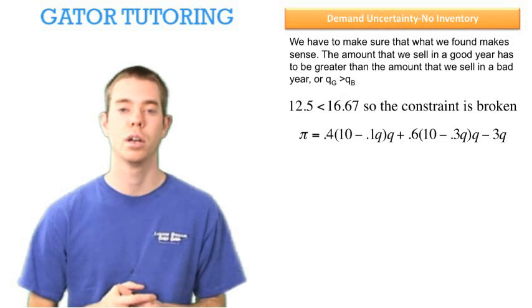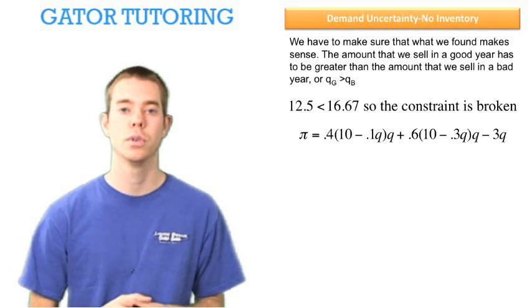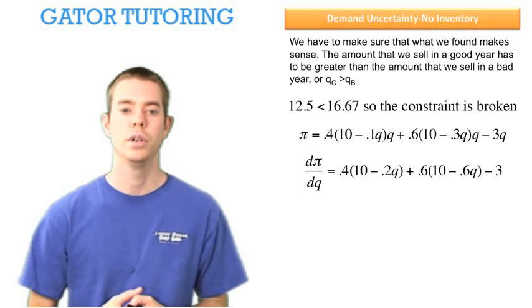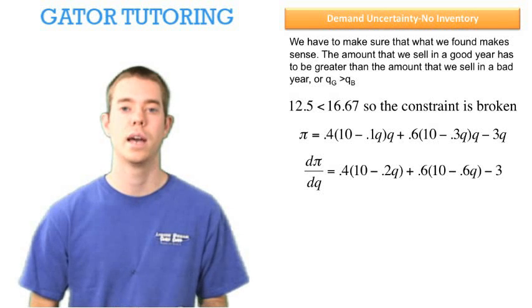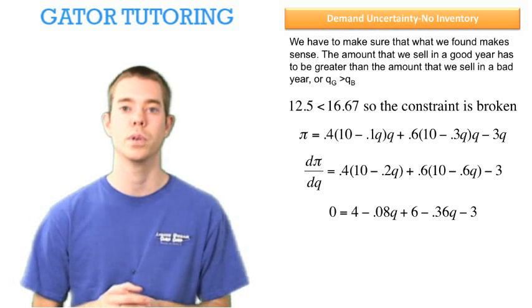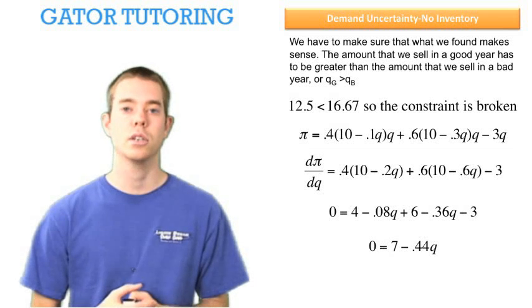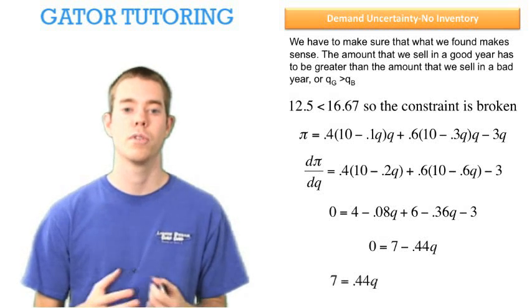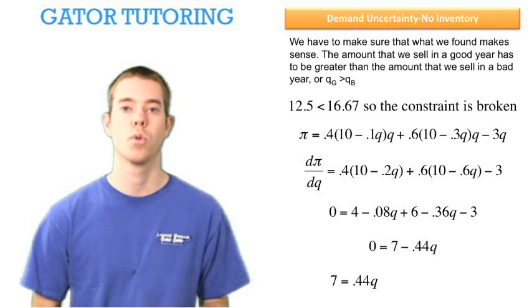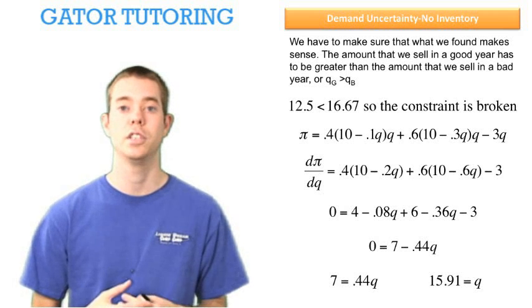So doing this, now we're ready to take the derivative with respect to just Q. We do that, we can combine like terms and we can now distribute through the 0.4 and the 0.6 into our parentheses and get 4 minus 0.08Q plus 6 minus 0.36Q minus 3 all equals zero. We can combine like terms and solve for Q. Adding 0.44Q to each side and dividing through by 0.44, we see the quantity that we want to produce to maximize profits, in this case is 15.91.